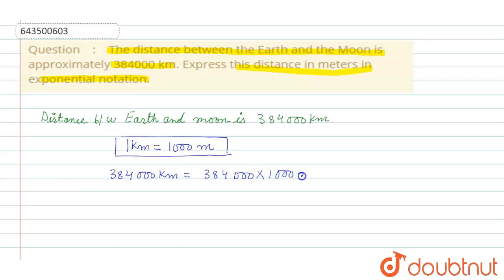So this is 384000000 meters. Now we can write it as 384 into 10 to the power 6 meters. Clear.